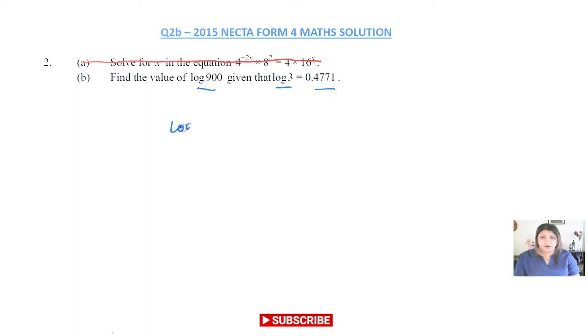So let's start. Log 900 - I can see there are zeros, so I'm going to straight away split this and write log(9 × 100).